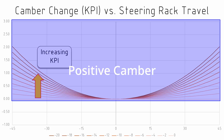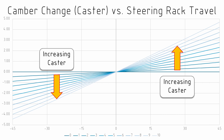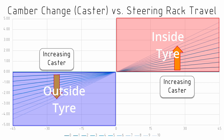If we do the same test but change the caster angle while keeping KPI at zero, we see that moving the steering rack left or right induces a camber change that is different on the inside and outside tyres. For the outside tyre, a steering change induces negative camber, and for the inside tyre the steering induces positive camber. As we increase the caster, the change to camber due to steering increases.